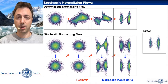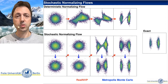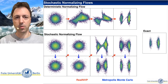So how can this work, and especially how can we train such networks? Because as soon as we introduce stochasticity, we lose the exact invertibility of the flow and therefore also lose the transformation of random variables.